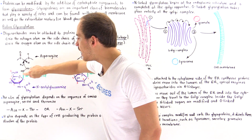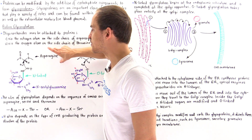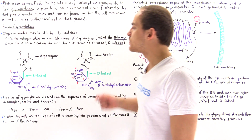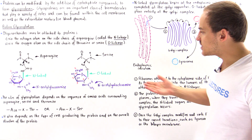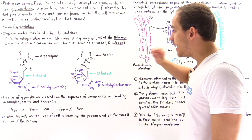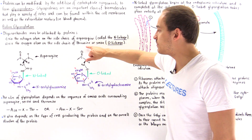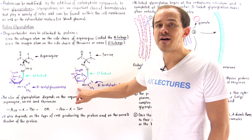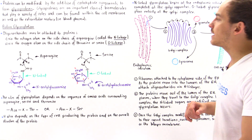The green bond is called the N-glycosidic bond because it's between the nitrogen of the side chain of the asparagine amino acid and the anomeric carbon, carbon number 1, of that glucose derivative. In the second case, we have the O-glycosidic bond, formed between the oxygen of the side chain of serine or threonine and the anomeric carbon number 1 of N-acetylgalactosamine, a modified galactose sugar molecule.